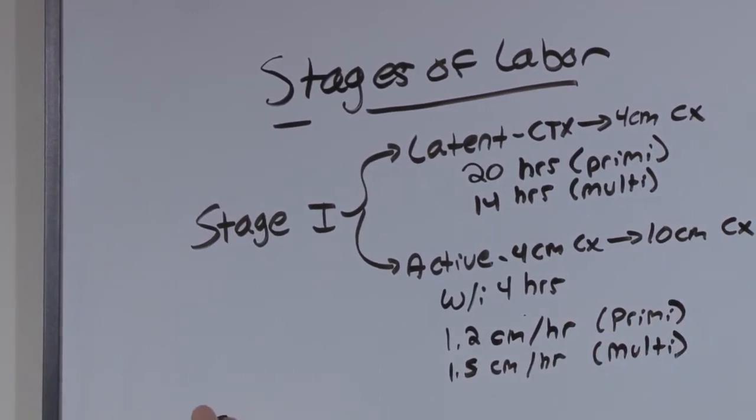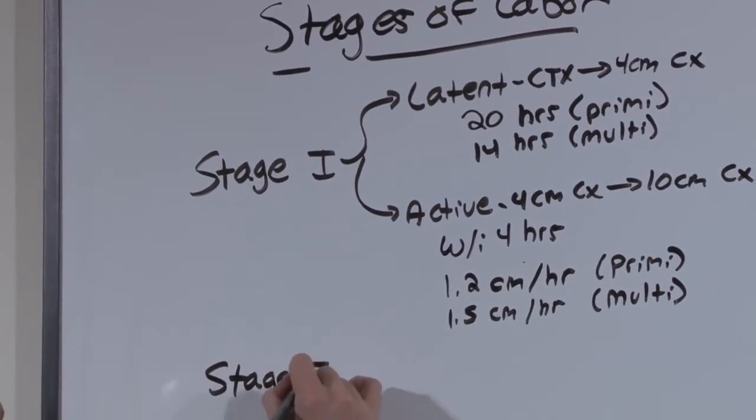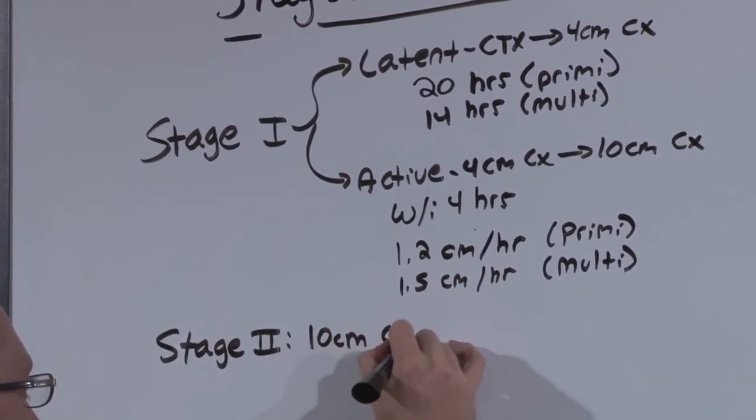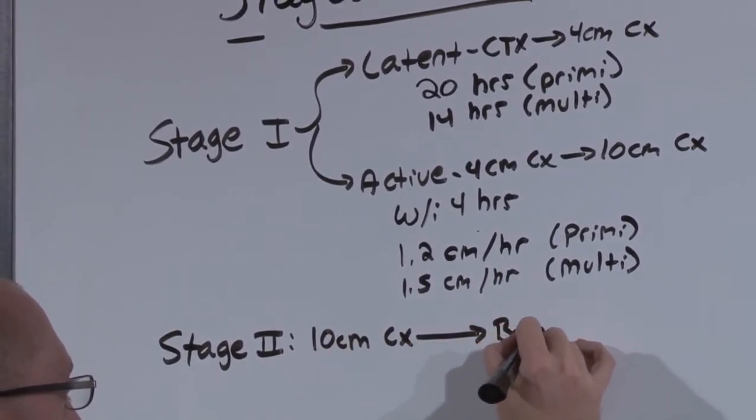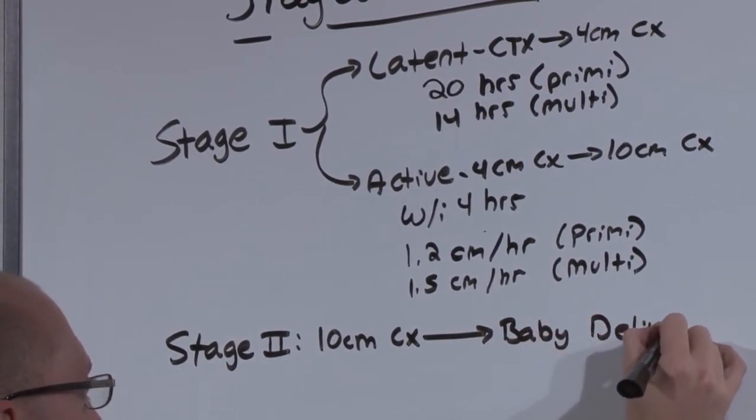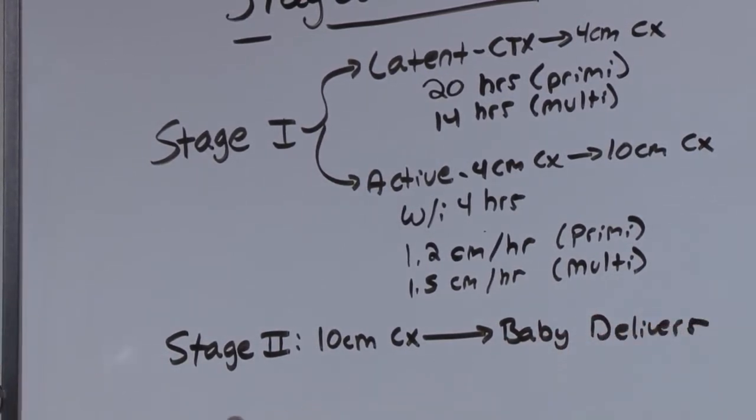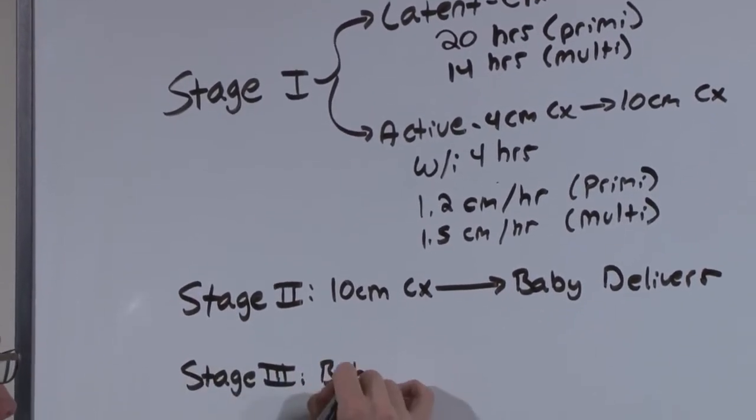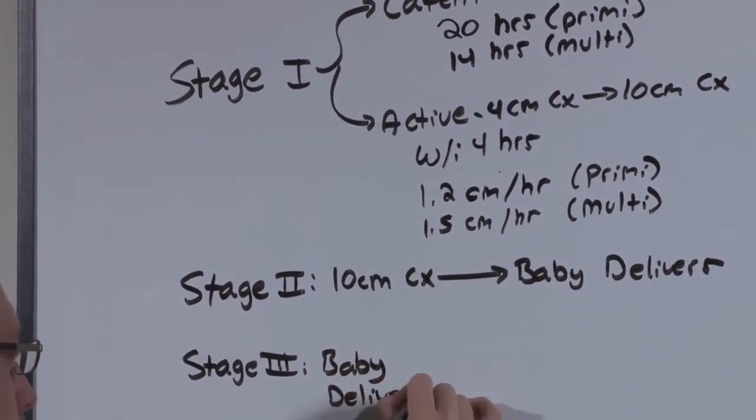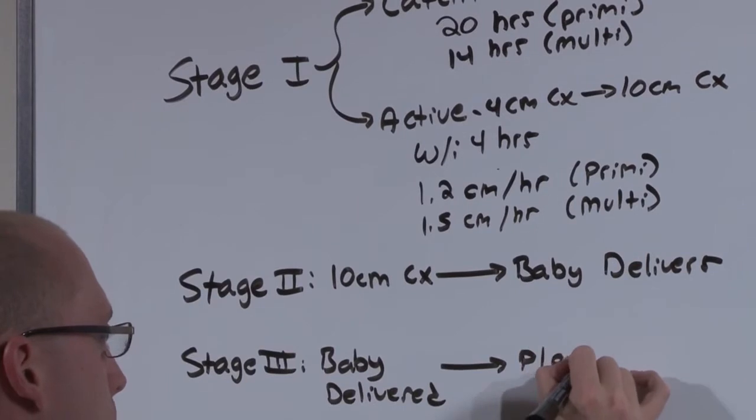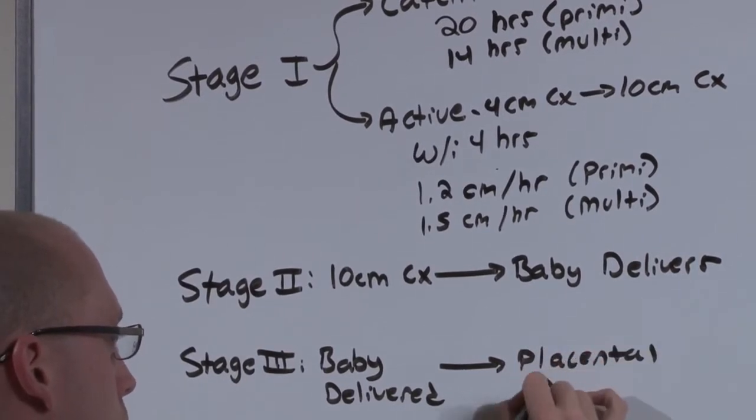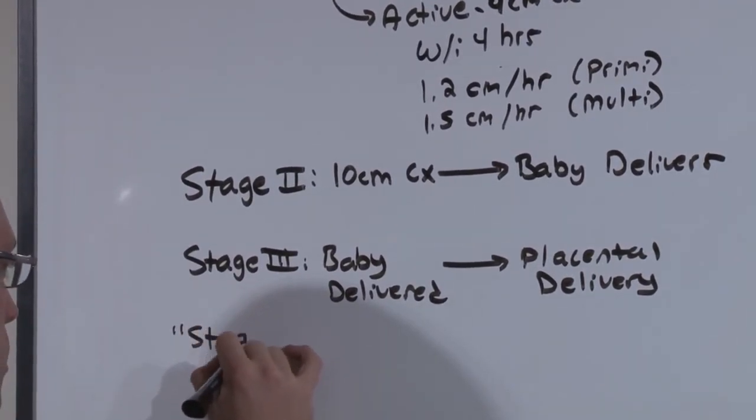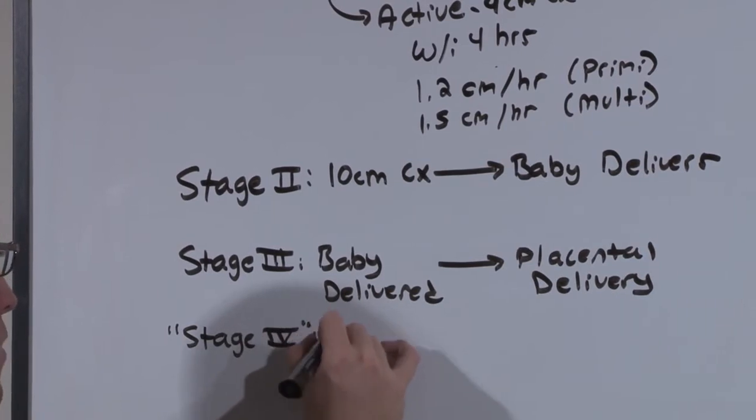Stage 2 begins when the cervical dilation is complete until baby is delivered. Stage 3 is baby gets delivered until the placenta gets delivered. And stage 4, which really isn't a stage, is essentially when everything is done.